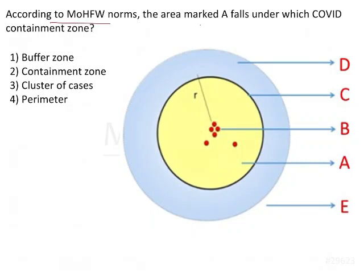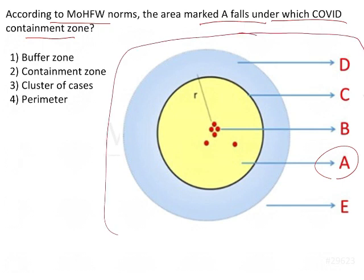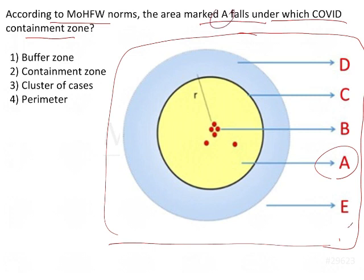According to the Ministry of Health and Family Welfare norms, the area marked A here falls under which COVID-19 contaminant zone. This is a typical contaminated area marking used in the Ministry of Health. Whenever a person or cluster of cases is found in a particular area, they divide the area into these kinds of zones. The question specifically asks what zone A represents — this is a recent current scenario question that could be asked.